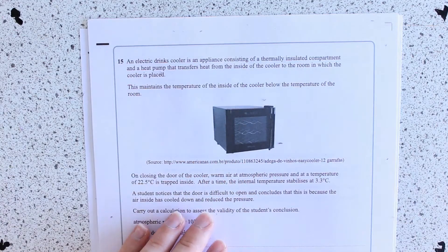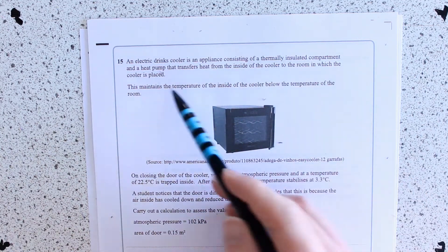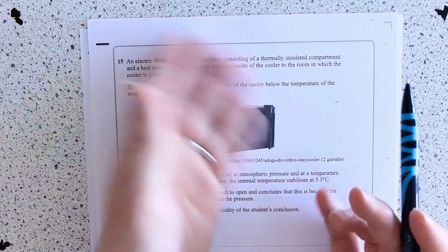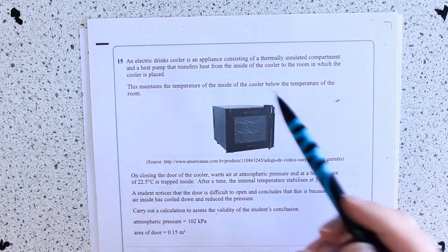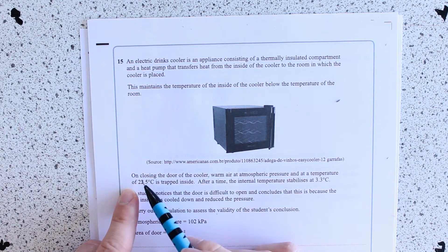An electric drinks cooler is an appliance consisting of a thermally insulated compartment. Heat pump transfers heat from the inside of the cooler to the room in which the cooler is placed. This maintains the temperature of the inside of the cooler below the temperature of the room, so heat's going from it to the outside.